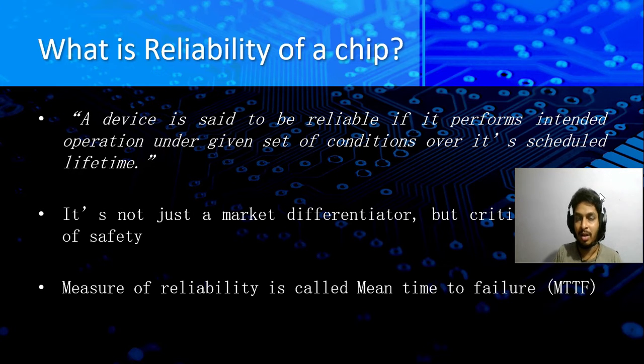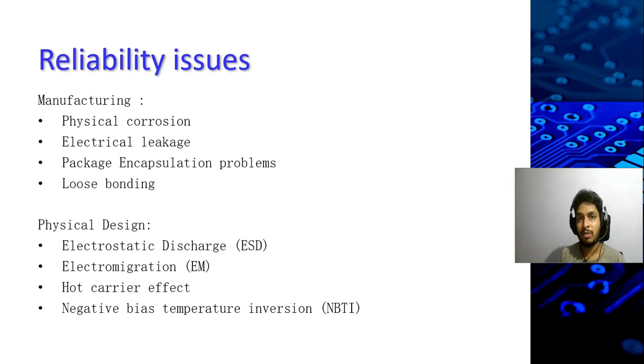There are two types of issues: one is related to manufacturing problems and the other is physical design problems which need to be taken care at the design phase of the chip. Manufacturing issues include physical corrosion due to leakage or other reasons like moisture, electrical leakage, package encapsulation problems, and loose bonding. These are the reasons why it can fail because of manufacturing defects.